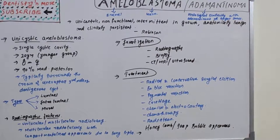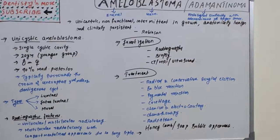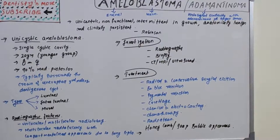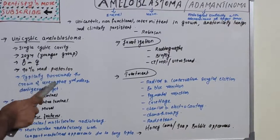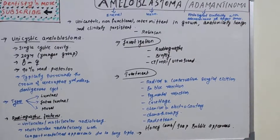Unicystic ameloblastoma was noted in clinical classification. Unlike multicystic, it is a single cystic cavity and is not very common. It is seen in a younger age group (around 20 years), with equal gender predilection. It occurs in 90% of cases in the mandible — specifically the posterior part — and typically surrounds the crown of an unerupted third molar.